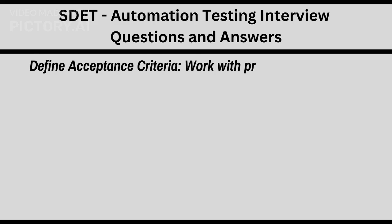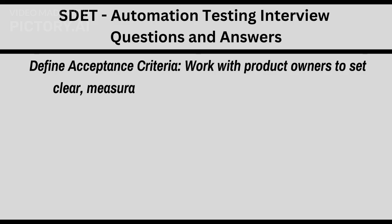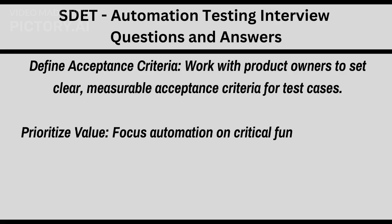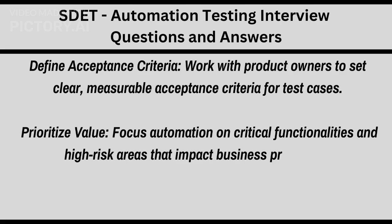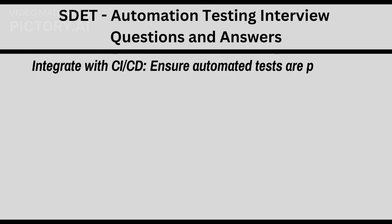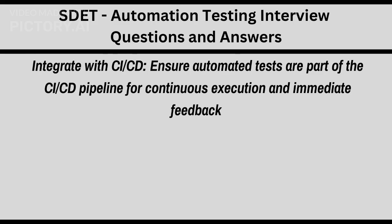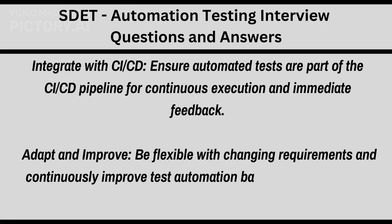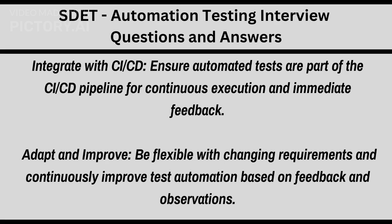Define acceptance criteria: work with product owners to set clear, measurable acceptance criteria for test cases. Prioritize value: focus automation on critical functionalities and high-risk areas that impact business processes. Integrate with CI/CD: ensure automated tests are part of the CI/CD pipeline for continuous execution and immediate feedback. Adapt and improve: be flexible with changing requirements and continuously improve test automation based on feedback and observations.